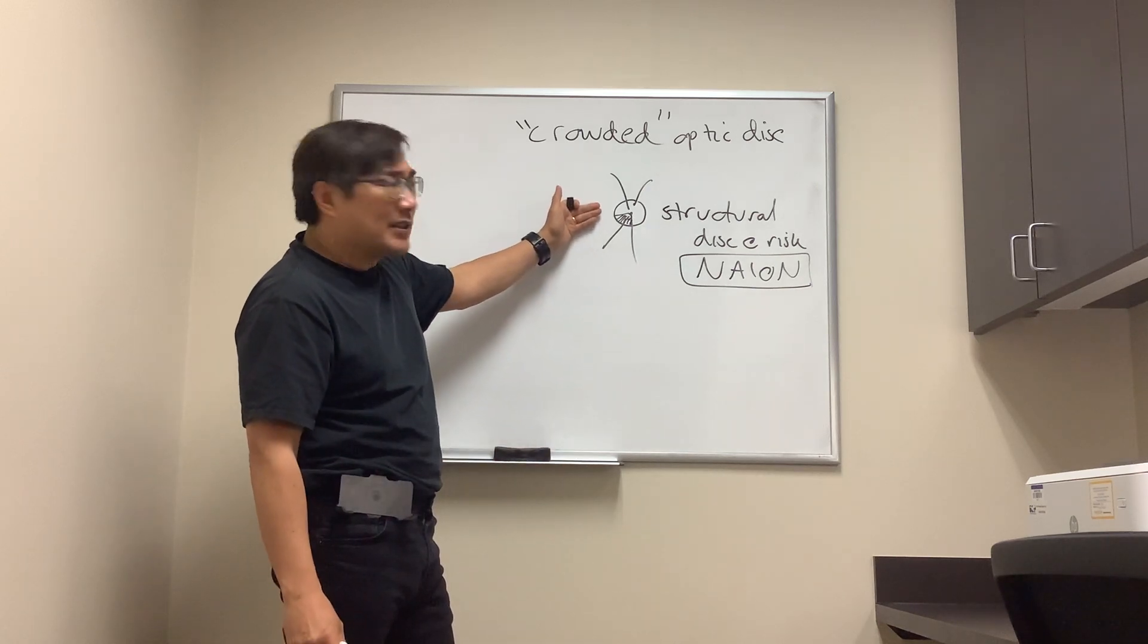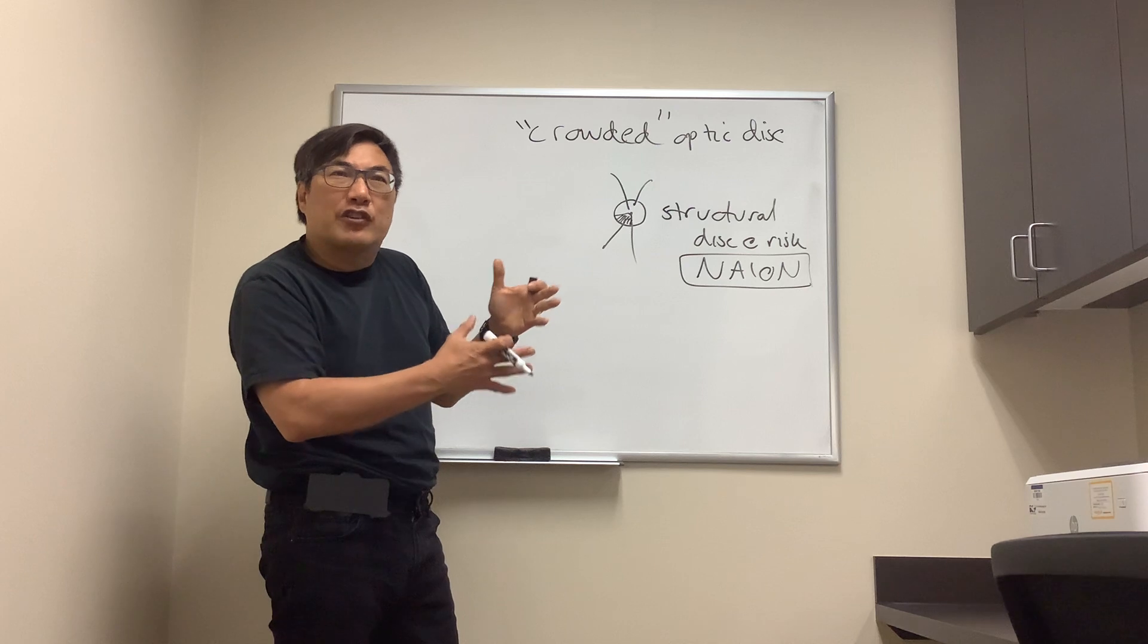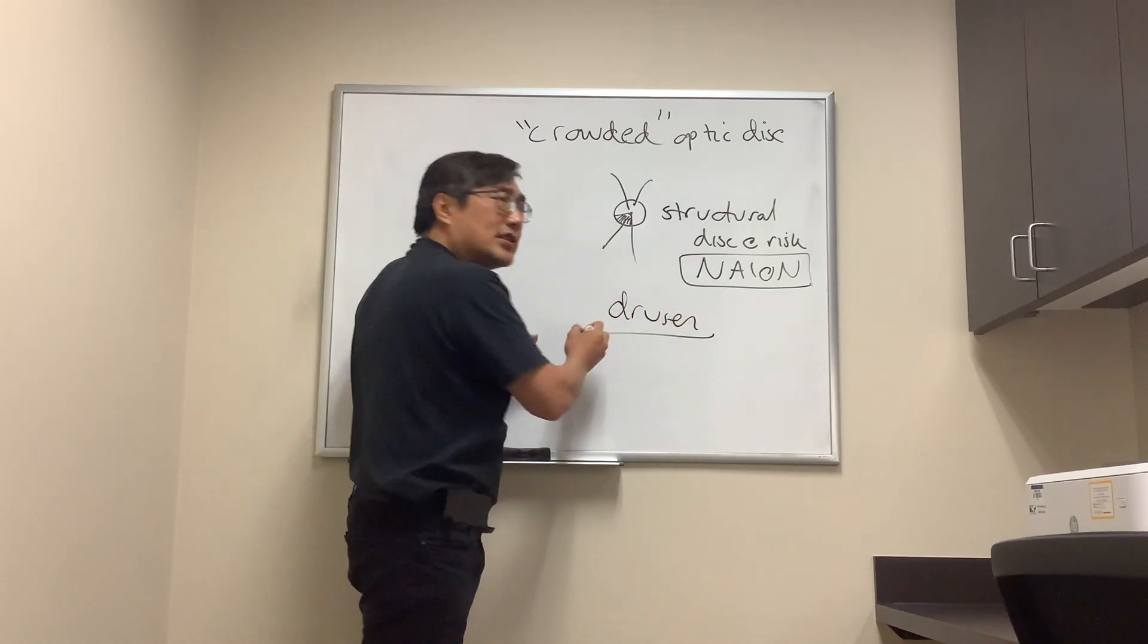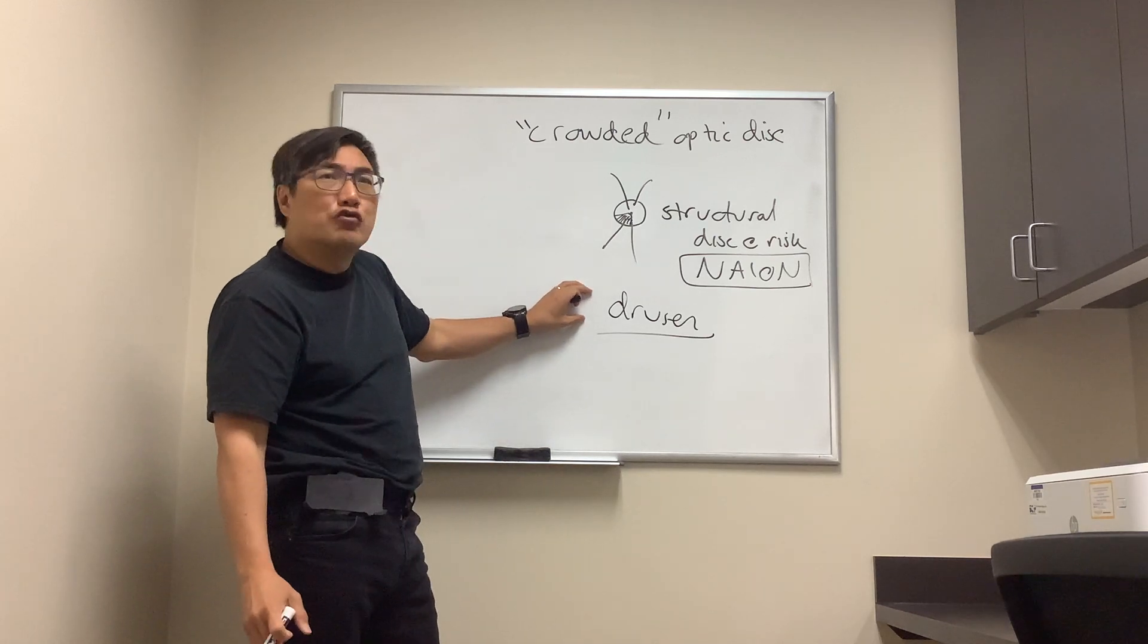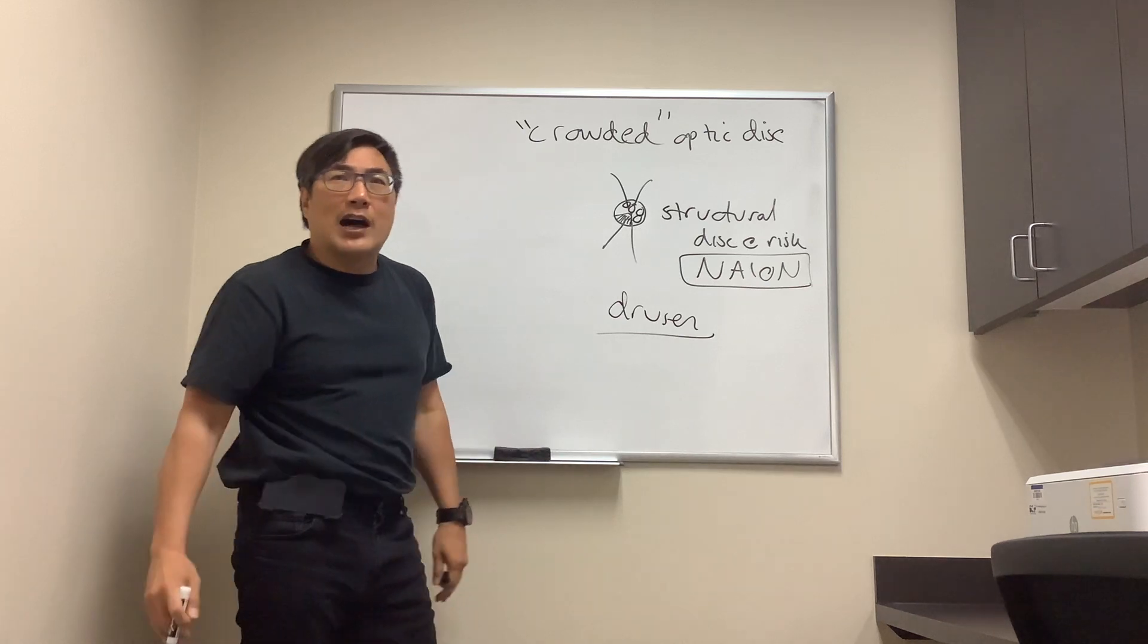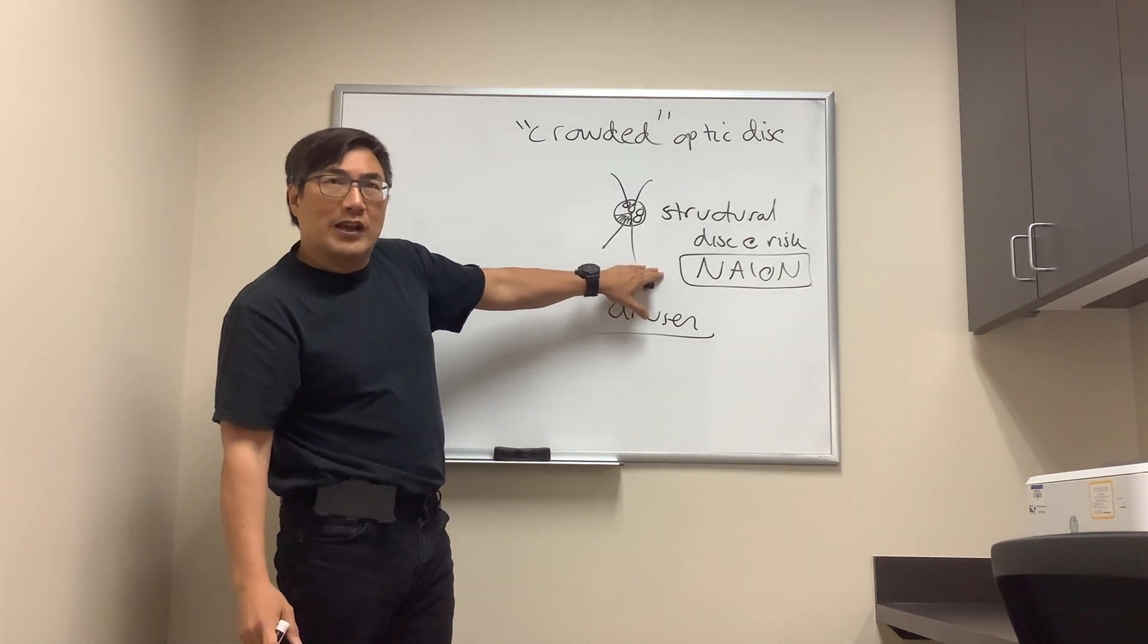Now the crowding of the disc can be congenital, or there could be rocks in your optic nerve. Those calcified or non-calcified rocks are called drusen. Sometimes people are born with a small optic nerve, and some people have drusen rocks inside their optic nerve. Those nodular excrescences are a predisposing risk factor for NAION.